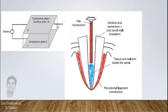When canals are wet, they act as capacitors. Capacitor means two conductors, i.e., file and periodontal ligament in case of tooth, separated by a dielectric, i.e., irrigant or blood or tissue in case of tooth.